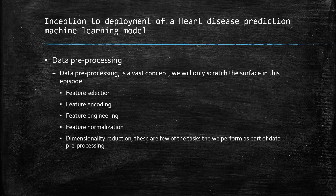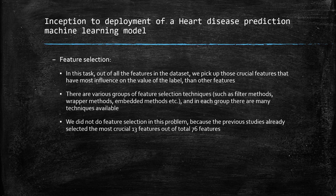Some of the tasks we perform as part of data preprocessing are: feature encoding, feature engineering, feature normalization, and dimensionality reduction. So what is feature selection?